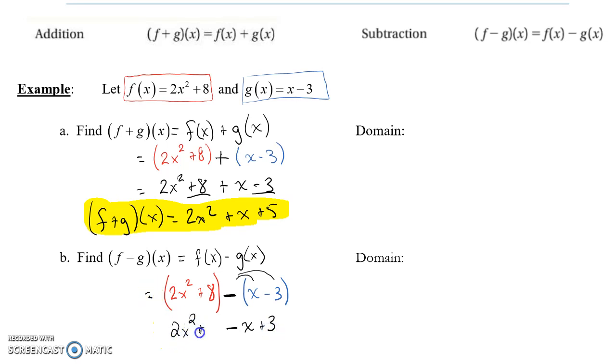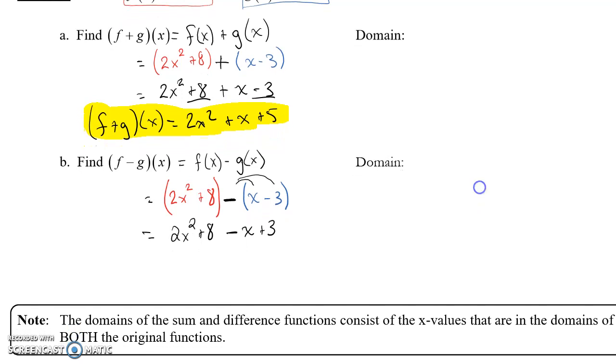The 2x squared plus 8 doesn't change. I can bring that down. We're not quite done. Again, I can write this as f minus g of x equals, again, I want this in standard form. So I have my quadratic term minus my linear term, and this time I have plus 8 and plus 3, so it's plus 11. When I take function f and I subtract function g, I get a different quadratic trinomial.